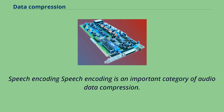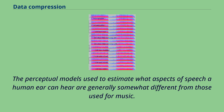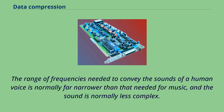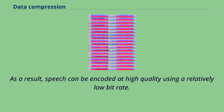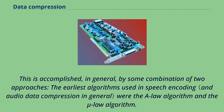Speech encoding is an important category of audio data compression. The perceptual models used to estimate what aspects of speech a human ear can hear are generally somewhat different from those used for music. The range of frequencies needed to convey the sounds of a human voice is normally far narrower than that needed for music, and the sound is normally less complex. As a result, speech can be encoded at high quality using a relatively low bit rate. This is accomplished, in general, by some combination of approaches; the earliest algorithms used in speech encoding were the A-law algorithm and the μ-law algorithm.